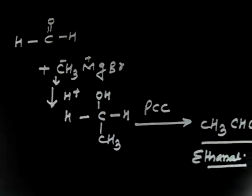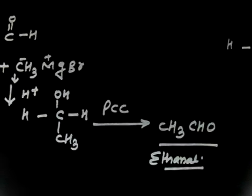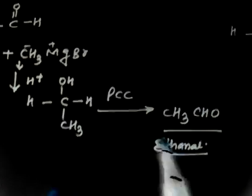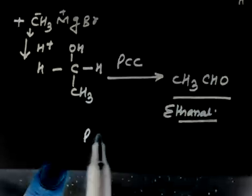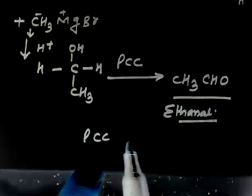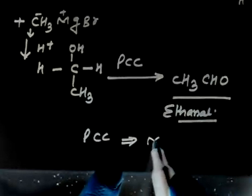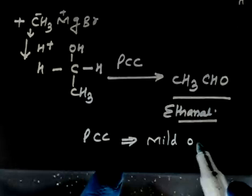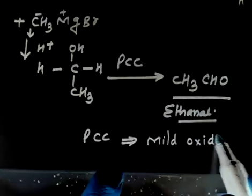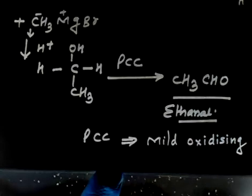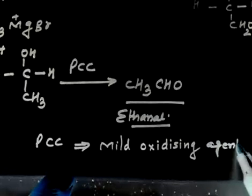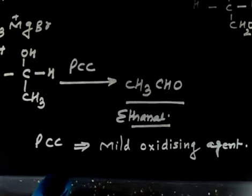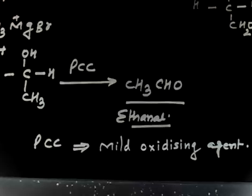Now if you do mild oxidation using PCC - pyridinium chlorochromate - the alcohol will be converted into aldehyde: CH3CHO. So this is your ethanol (acetaldehyde). PCC is a mild oxidizing agent that only converts alcohol to aldehyde - this you have to remember.